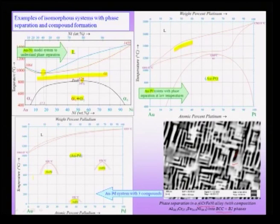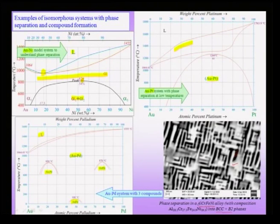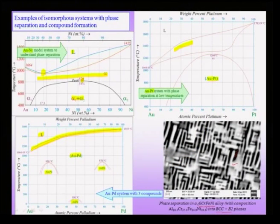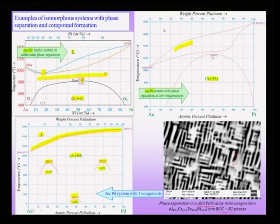Now, going to the compound formation system seen on the left hand side: you have a liquid at high temperatures and an isomorphous kind of system with an elevation in the melting point. That means such a system will show a tendency for ordering. We see three ordered compounds: one ordering reaction at 850°C, another at 870°C, and a third at 1000°C — three compounds forming in the gold-palladium system.